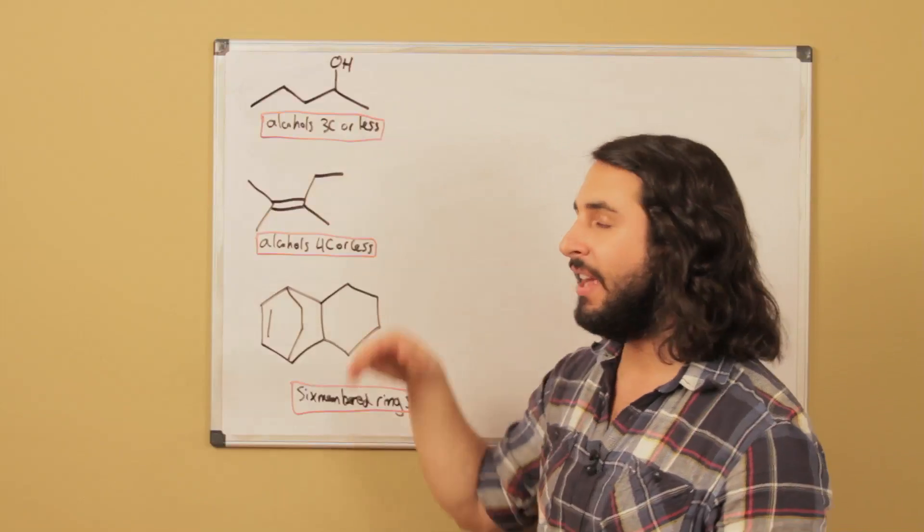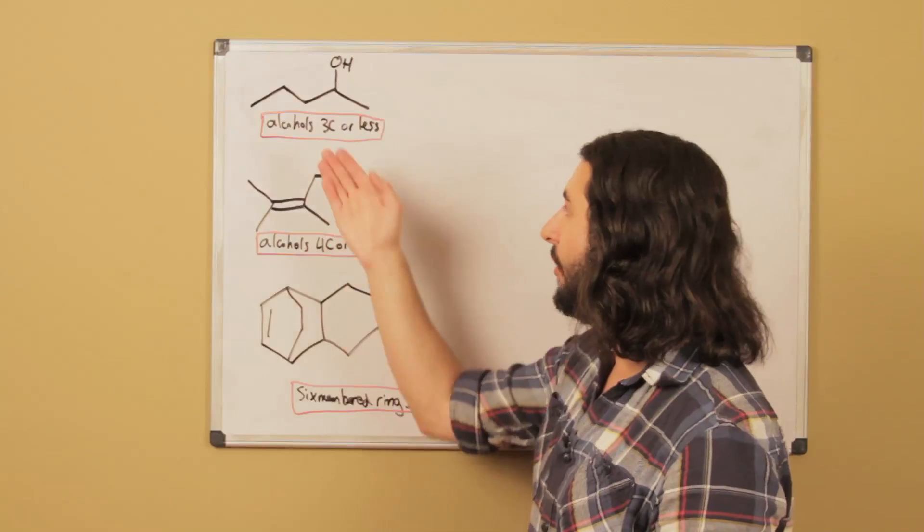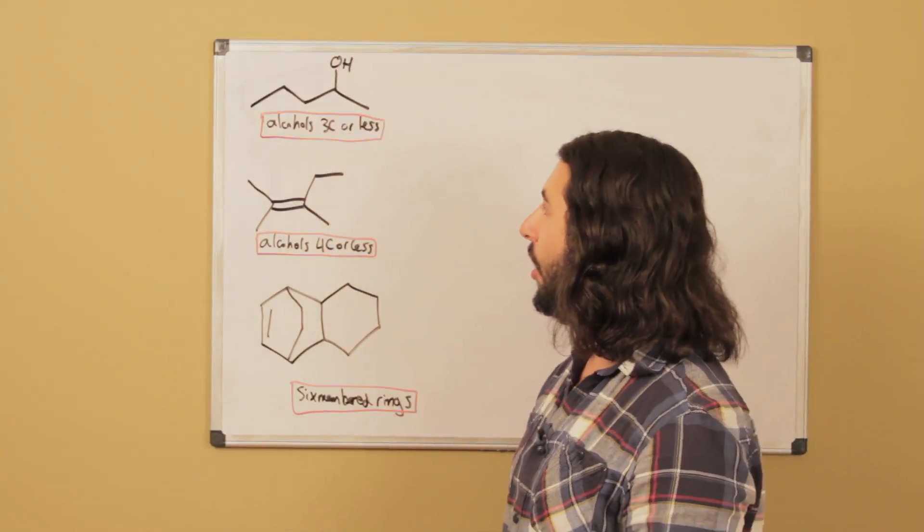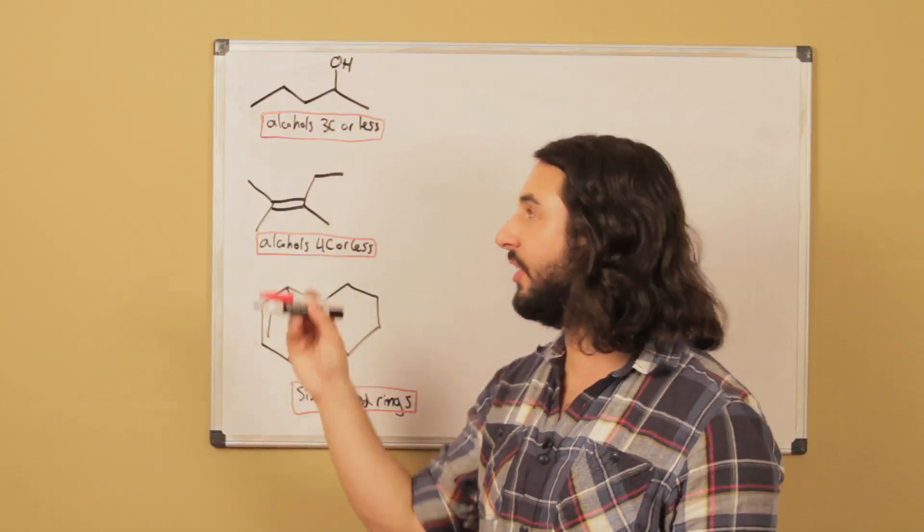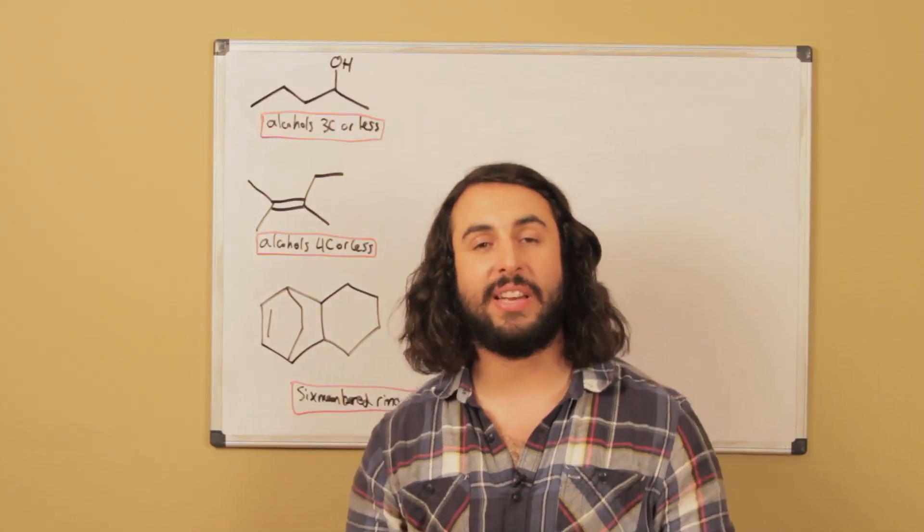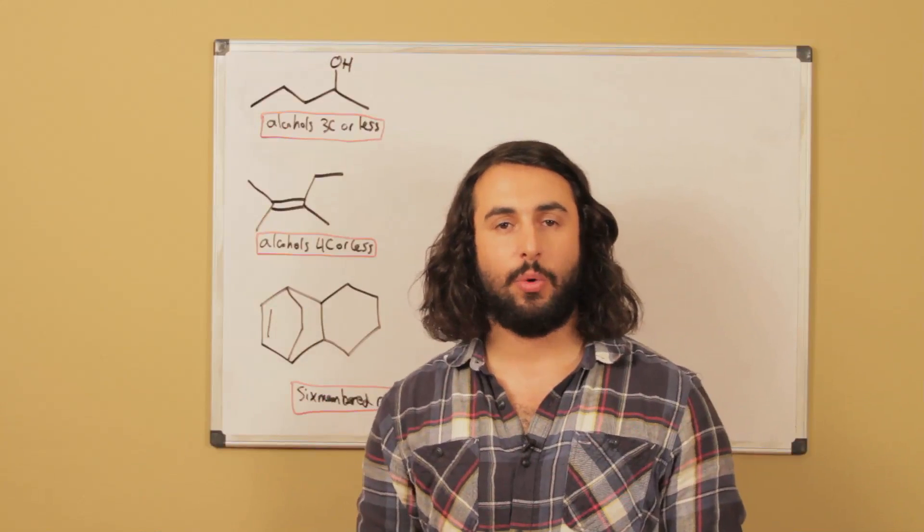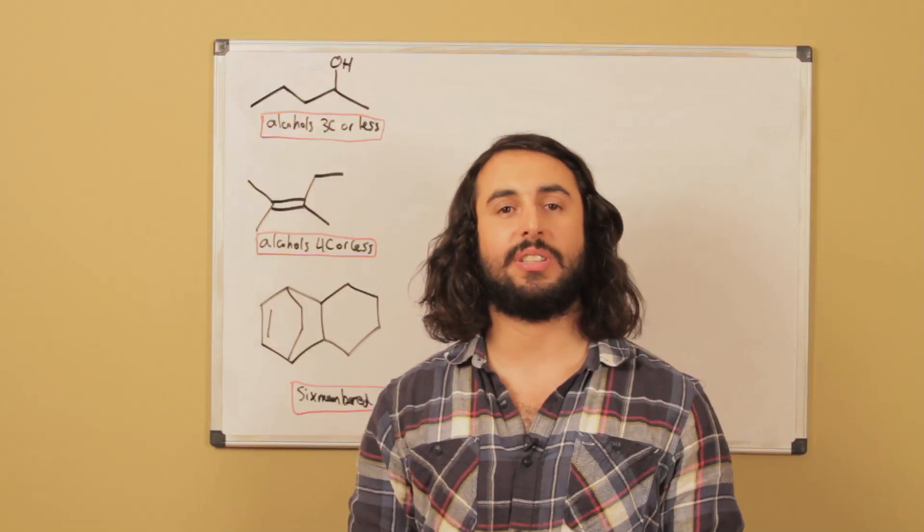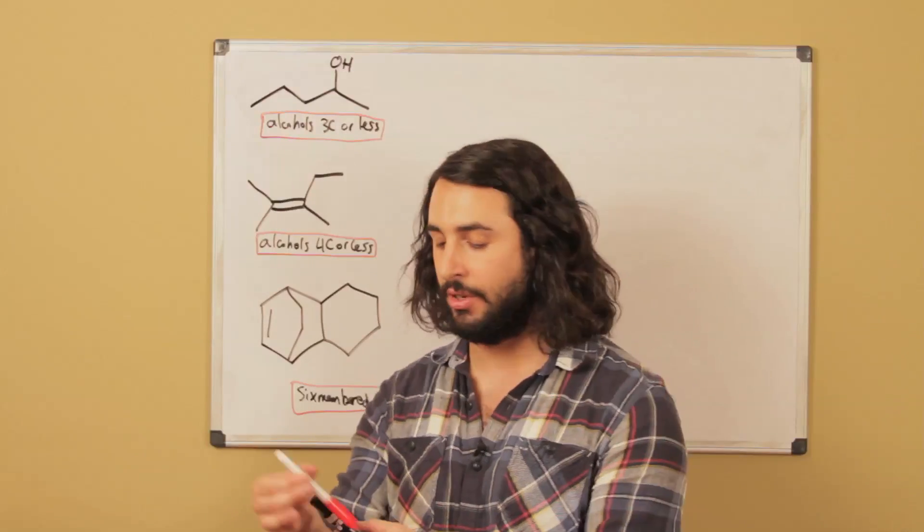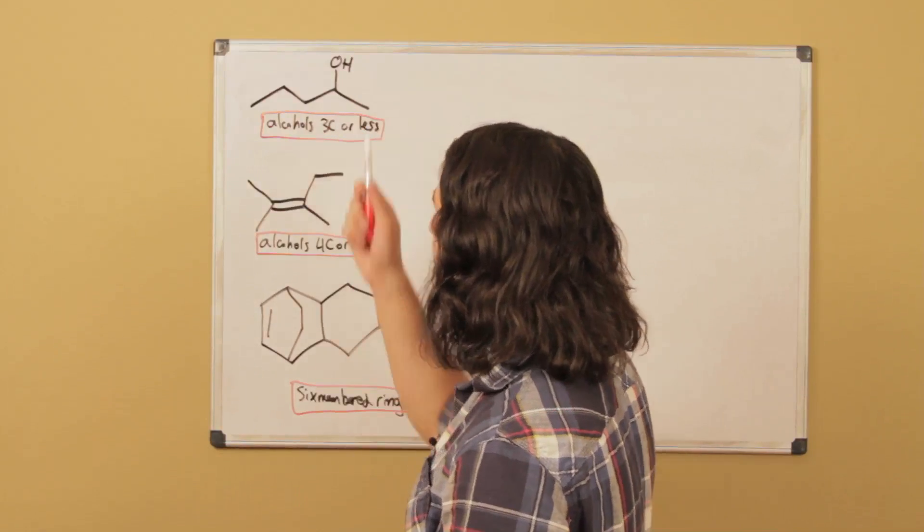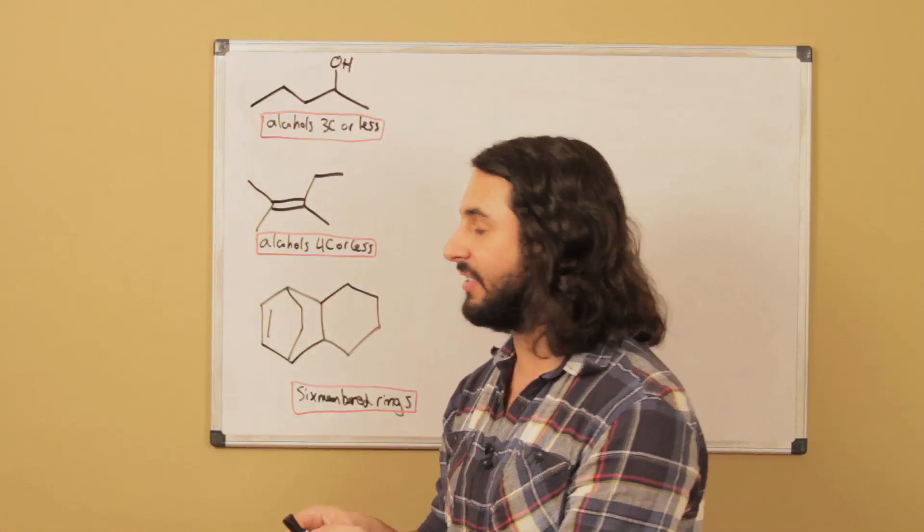Let's say we're looking at this compound. The allowed starting material is alcohols of three carbons or less. We know this is an alcohol. We need to build an alcohol from smaller pieces. What reactions do we know that make alcohols? If you're in an organic chemistry course, the first thing that might come to mind is a Grignard reaction.